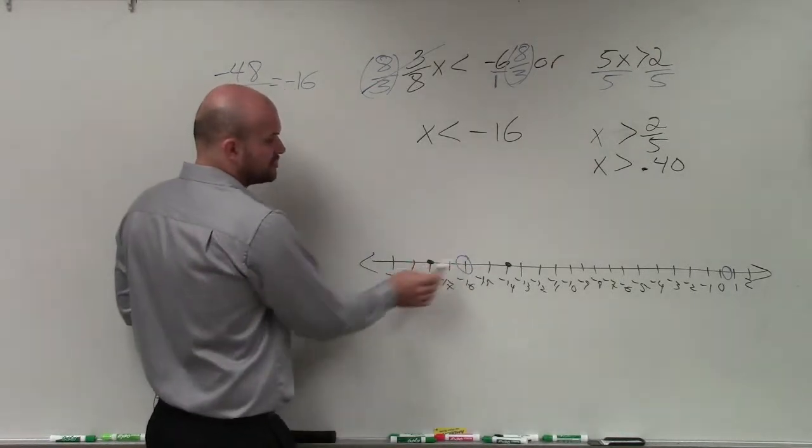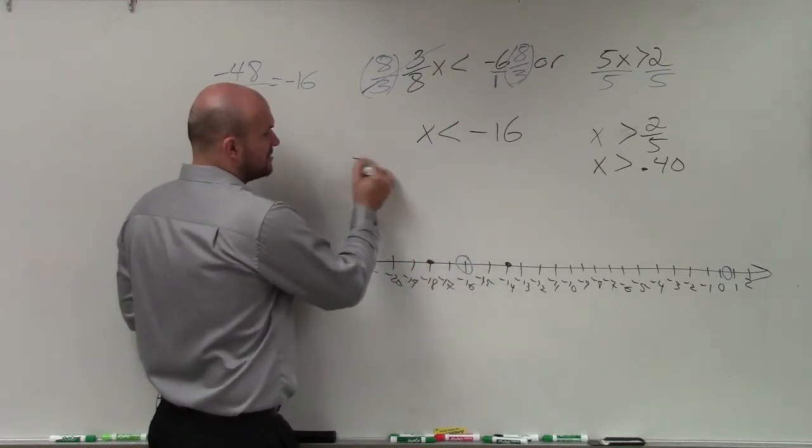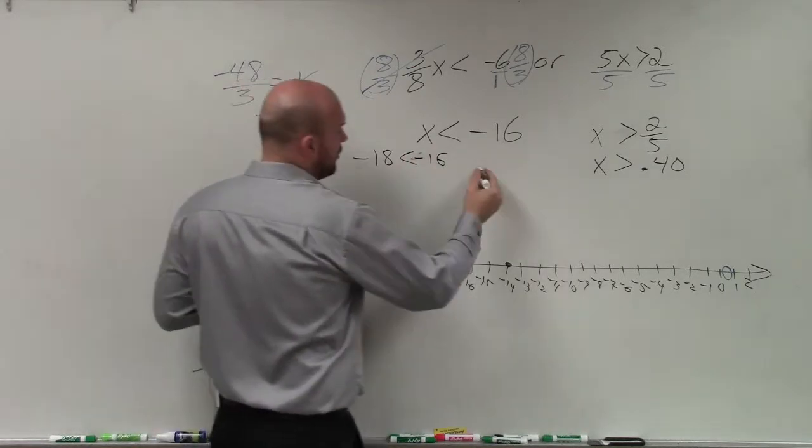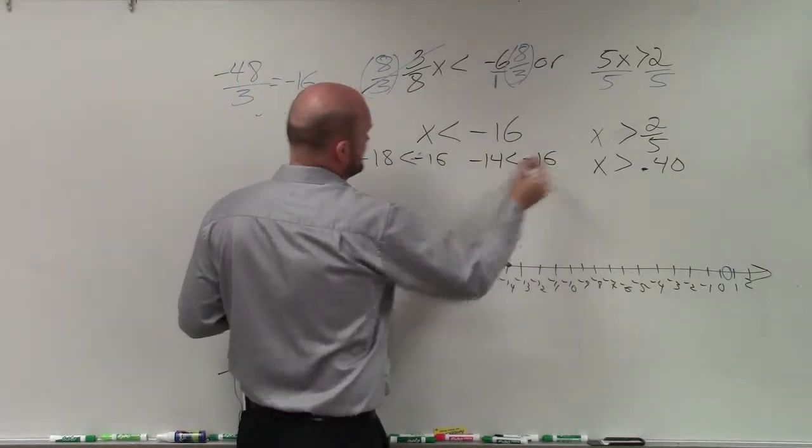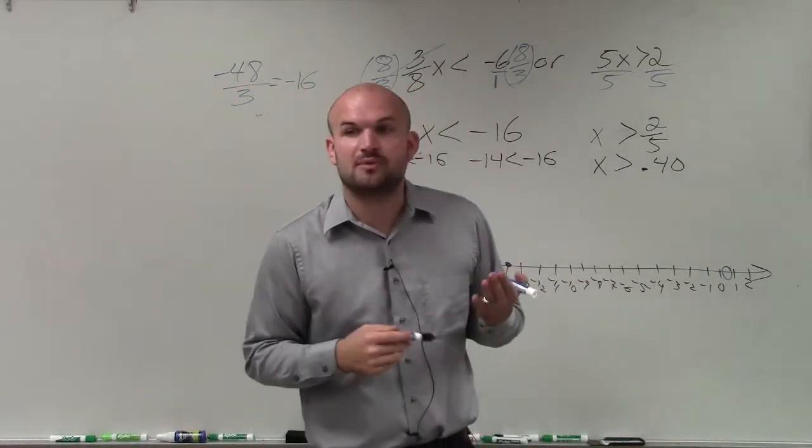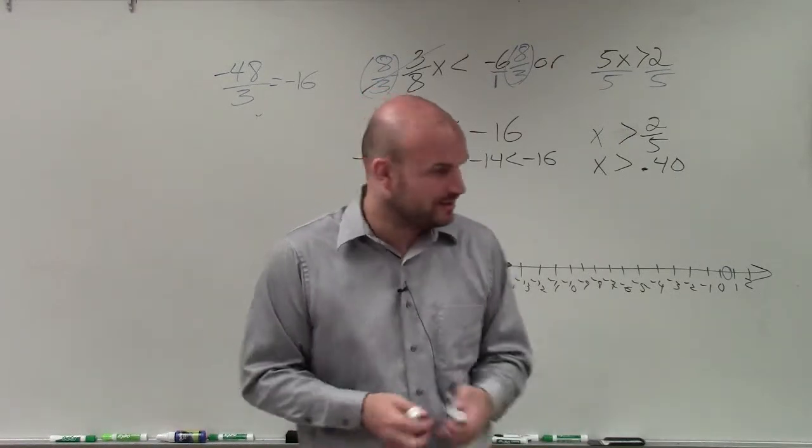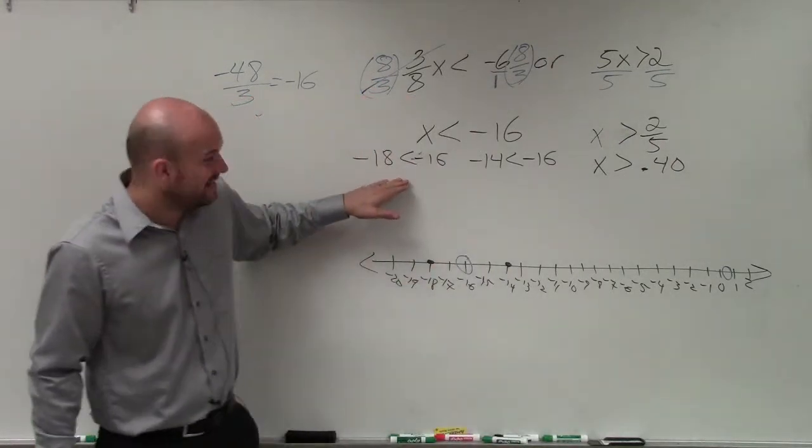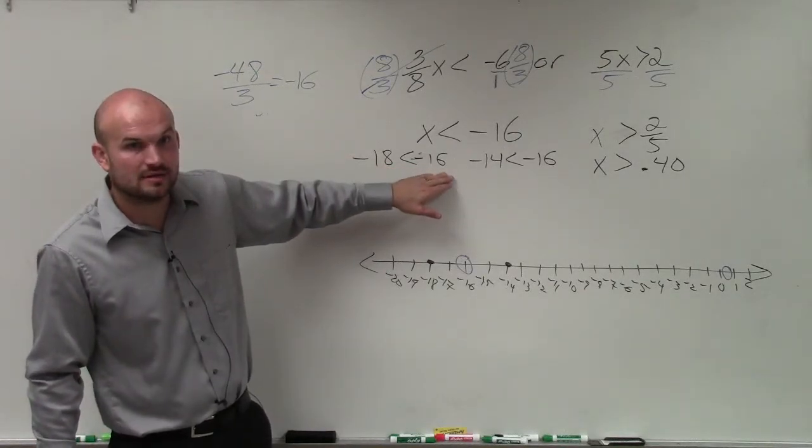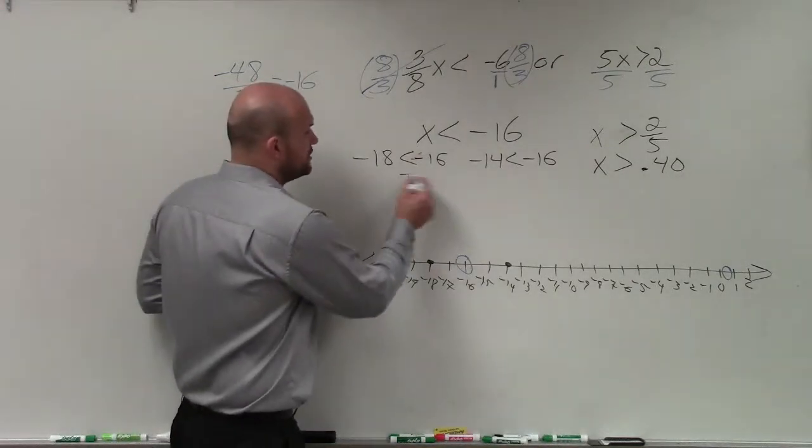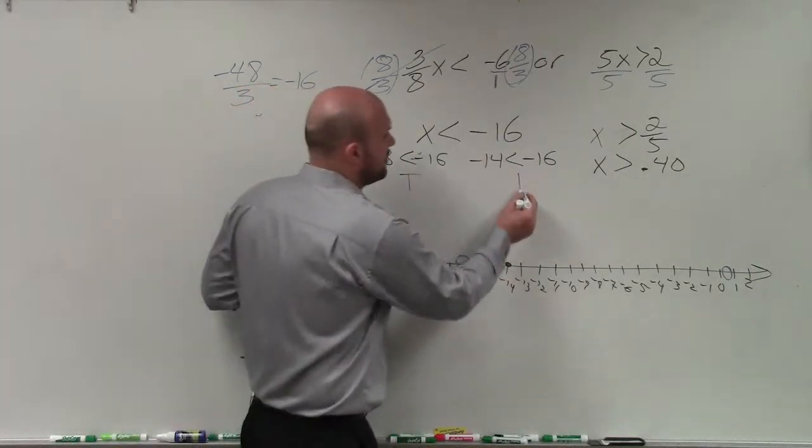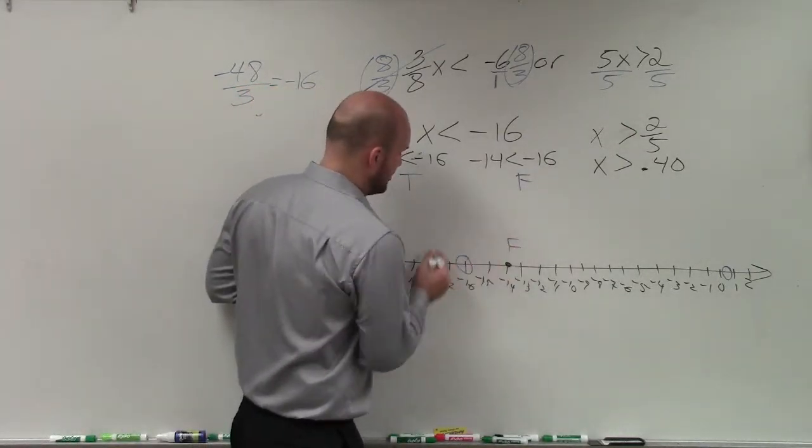So all you do is take your two points that you chose and plug them in for x. So negative 18 is less than negative 16, or negative 14 is less than negative 16. And again, the way that I like to think about negative numbers is by how much money you owe. Think about owing money. So if you look at negative 18, if you owe somebody $18, do you have less money than if you owed them $16? Yes. So this would be true. And if you owe somebody $14, do you have less money than if you owe them $16? No. That's false. So this point is false. This point is true.